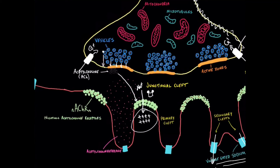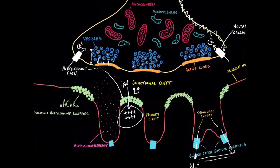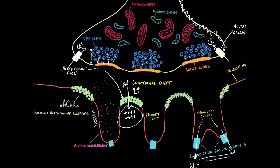Acetylcholinesterase is the enzyme that destroys acetylcholine. It is produced in the muscle membrane and then released from the muscle membrane into the junctional cleft, but it remains attached via little stalks of collagen that keep the acetylcholinesterase molecules in proximity to the receptors and the muscle membrane. This prevents it from diffusing away into the interstitial fluid. To me, these acetylcholinesterase molecules with their collagen stalks create a visual of a sort of minefield that the acetylcholine has to navigate through to reach the receptors.